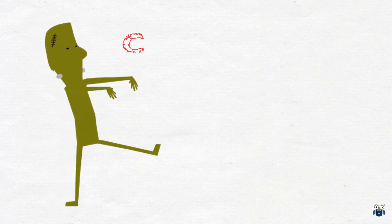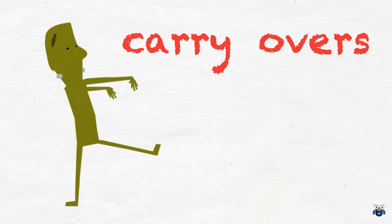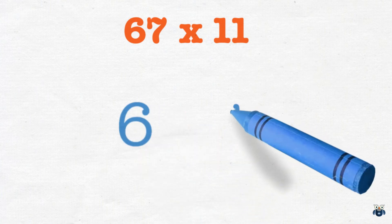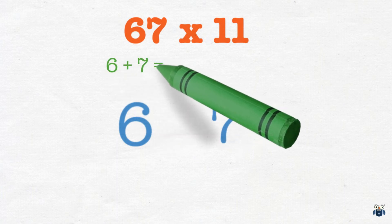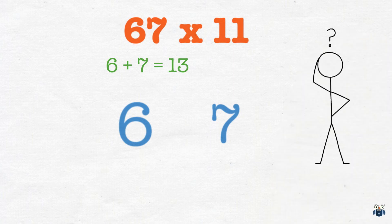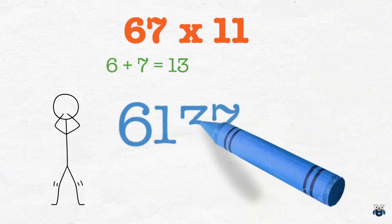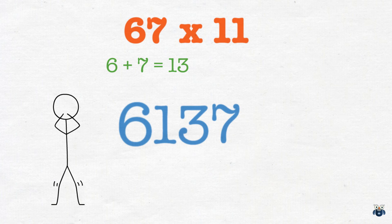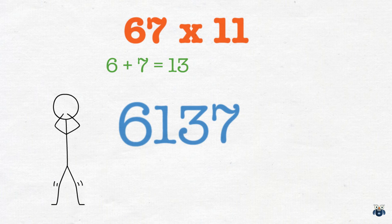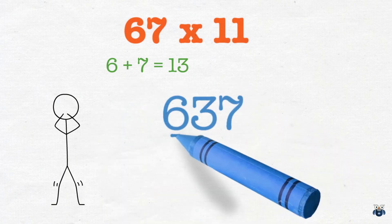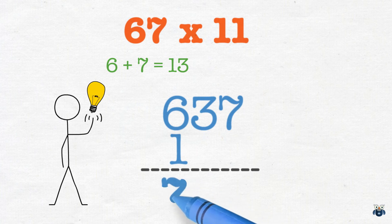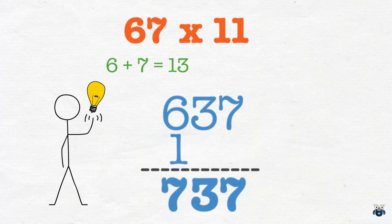In this next problem we will introduce a new level of complexity: carried over digits. What is 67 times 11? As before, we write down both digits, then add our digits — 6 plus 7 is equal to 13. Now, if we write 13 in the gap as before, our answer would be 6137 — but that is incorrect. What we should have done is write down the 3 and carry over the 1. Because of this carried over 1, our 6 becomes a 7. This gives us 737, which is the final and correct answer.